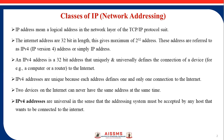Internet addresses are 32 bits, giving a maximum of 2 to the power 32 addresses, meaning more than 4 billion devices can be connected to the internet. These addresses are referred to as IPv4 addresses. An IPv4 address is a 32-bit address that uniquely and universally defines the connection of a device to the internet. IPv4 addresses are unique because each address defines one and only one connection to the internet — two devices can never have the same address at the same time. These addresses are also universal, meaning the addressing system must be accepted by any host that wants to be connected to the internet.